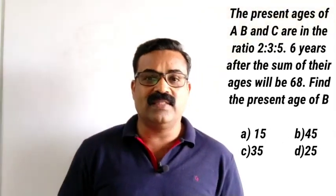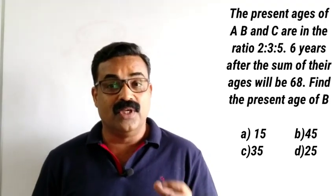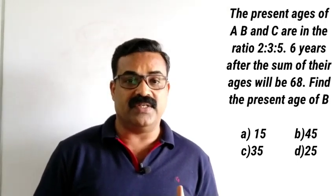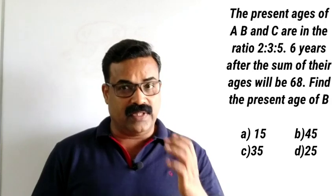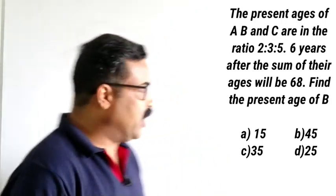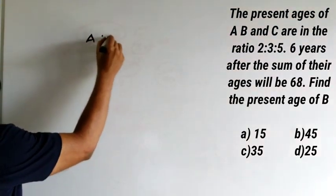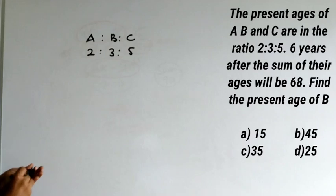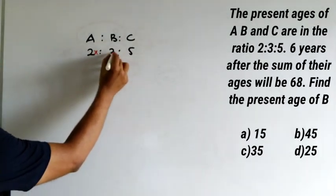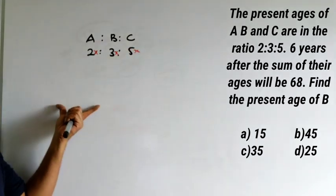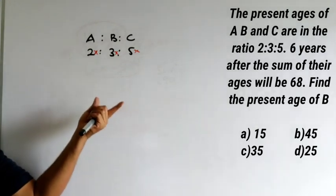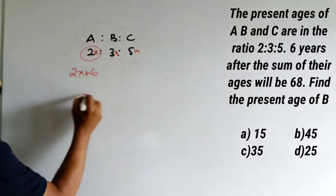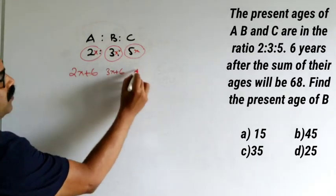The present ages of A, B, and C are in the ratio 2:3:5. Six years after, the sum of their ages will be 68. Find the present age of B. Let the ages be 2x, 3x, and 5x. After six years, their ages become 2x+6, 3x+6, and 5x+6.